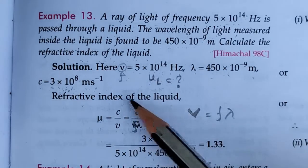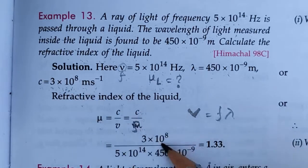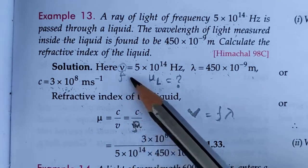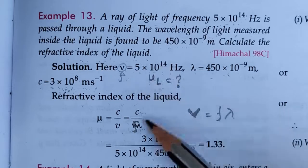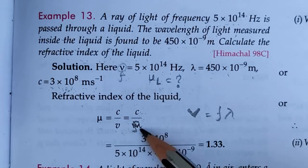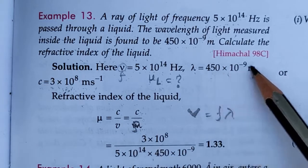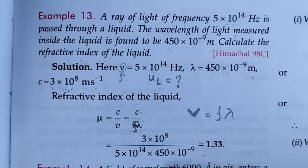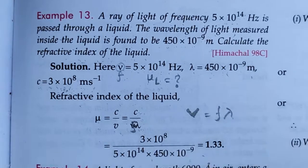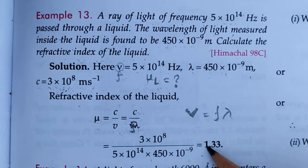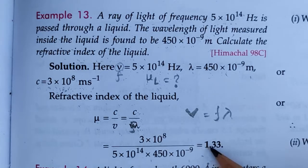Value of c equals 3 × 10⁸, divided by f equals 5 × 10¹⁴, multiplied by lambda equals 450 × 10⁻⁹. By calculating, we find the value of mu equals 1.33.